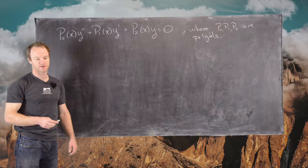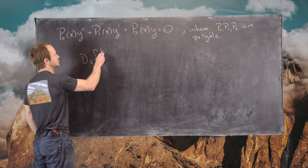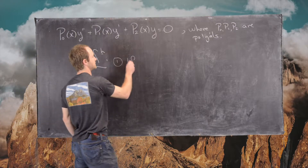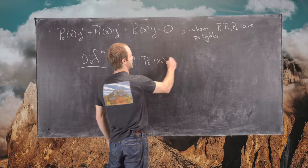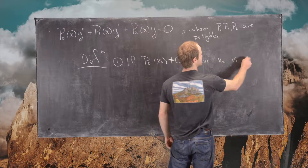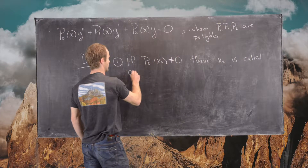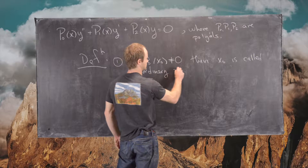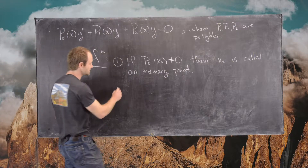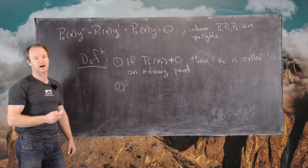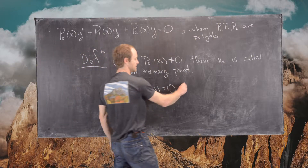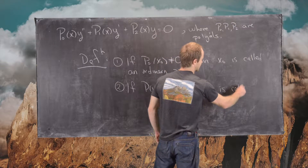I want to introduce some terminology. The first definition: if P₀(x₀) is not equal to zero, then x₀ is called an ordinary point (also called a regular point) for this differential equation. The second part of the definition: if P₀(x₀) equals zero, then x₀ is called a singular point.